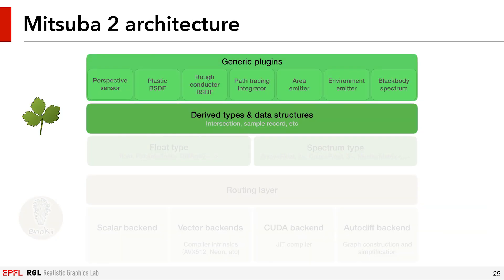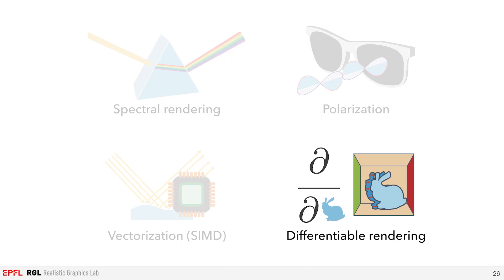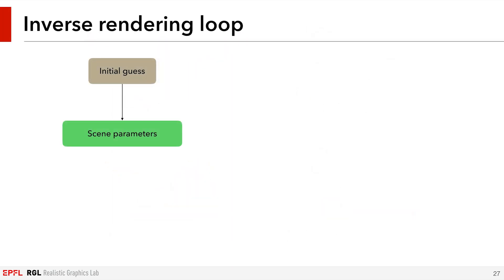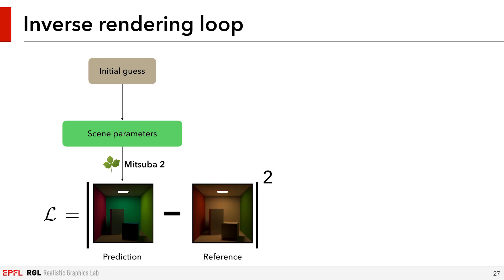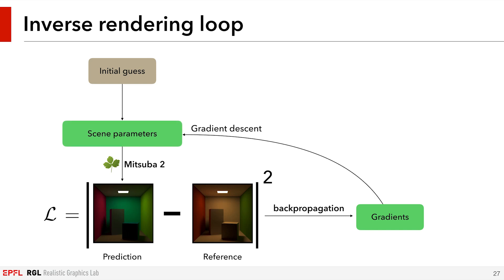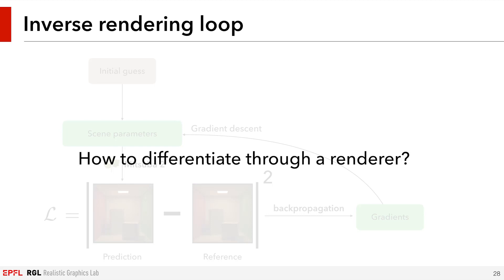We've seen how the entire renderer is lifted over the float and spectrum types, which allows us to retarget it to different applications. Before concluding this part of the presentation, I would like to give more details about how we achieve differentiable rendering on the GPU. Differentiable rendering is typically used as part of an optimization loop where we are trying to recover unknown scene parameters. We start from an initial guess and create an image using a differentiable renderer. We then compare that current result to a reference image using a loss function, and backpropagate through the simulation to compute gradients of the loss with respect to the scene parameters. Finally, we apply a gradient descent step to update the scene parameters.